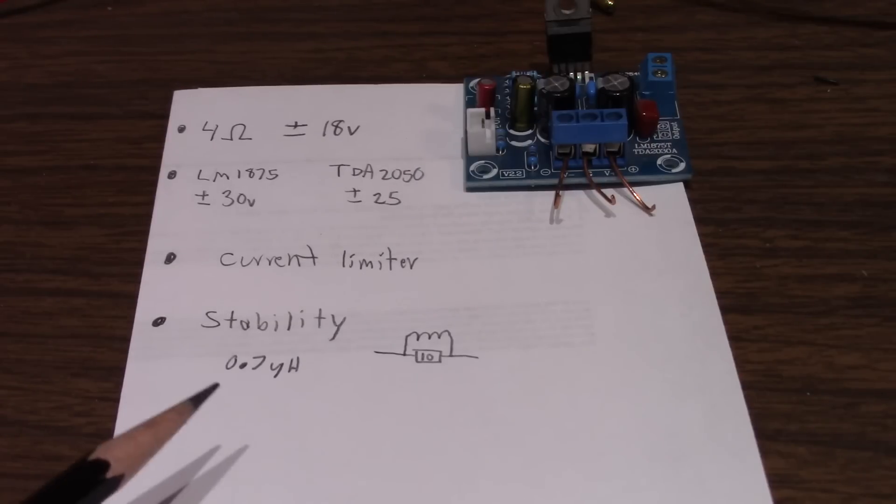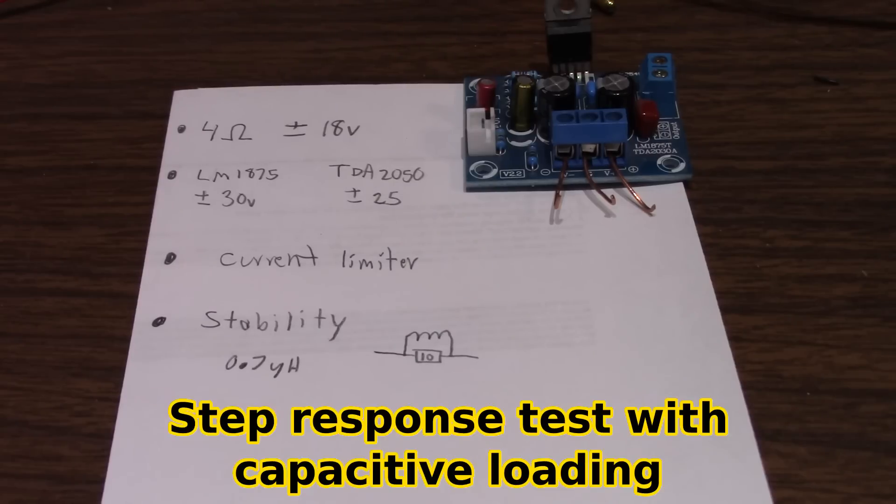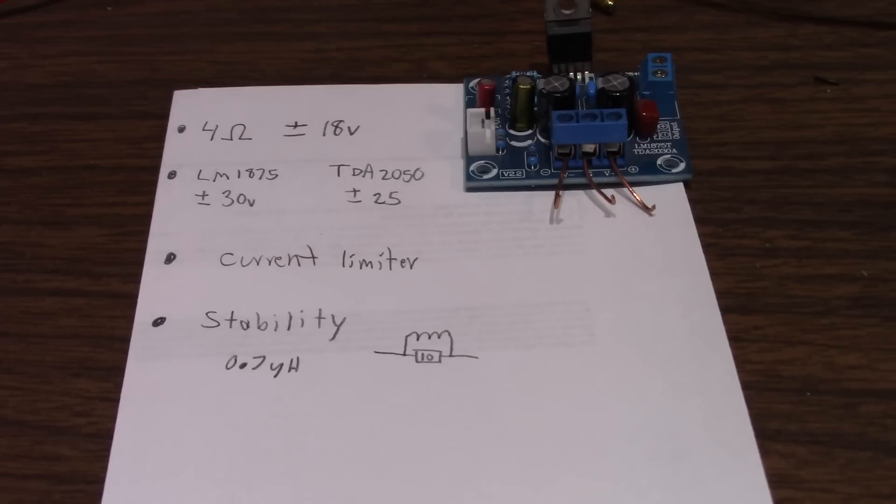And finally, stability. I find the LM1875 to be a little more stable when doing my now standardized loading tests with the capacitance. The TDA2050 would oscillate. The LM1875 would ring, but not quite break out into an oscillation.